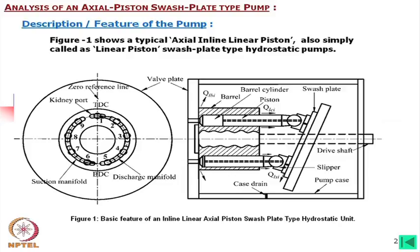Why is it called axial inline linear piston? Axial means the pistons are parallel to the axis of the shaft. Inline means all pistons, if you unfold them, will be in line acting one after another. Linear refers to the motion of the pistons, and Swashplate refers to this inclined plate which I will describe in the next slides.